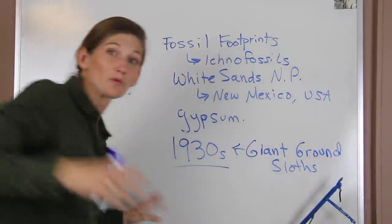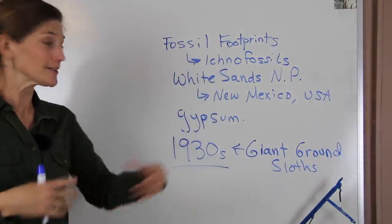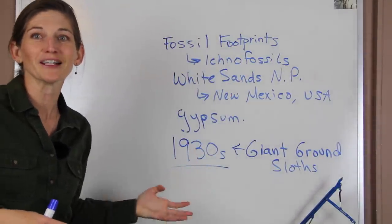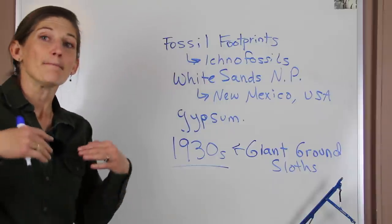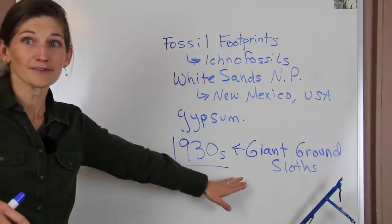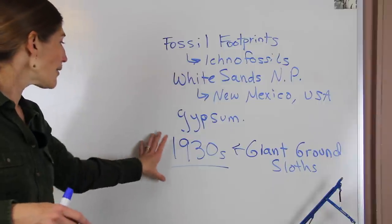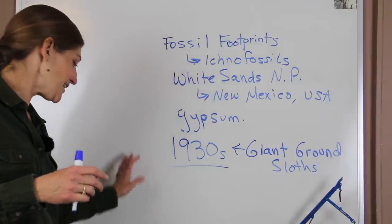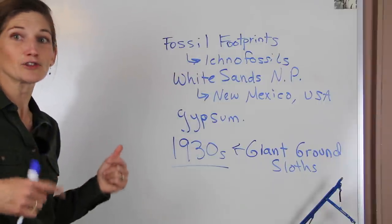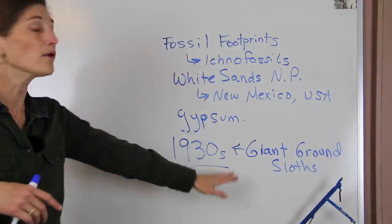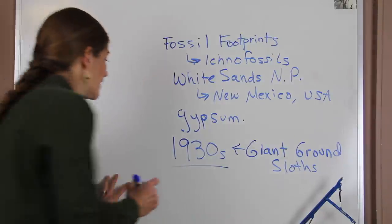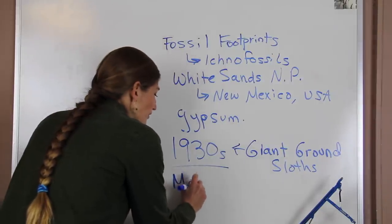These are really big creatures with big feet that leave behind gigantic footprints. They were alive back during the ice age but they're extinct now. Since the 1930s, thousands of tracks have been found including more of these giant ground sloths. They've also found mammoth fossils.